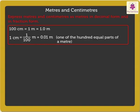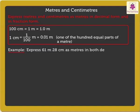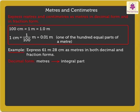Now let's solve an example to understand it in a better way. Express 61 meters 28 centimeters as meters in both decimal and fraction forms. Firstly, we shall express it in decimal form. Meters form the integral part and centimeters, which are 99 or less, form the decimal part.